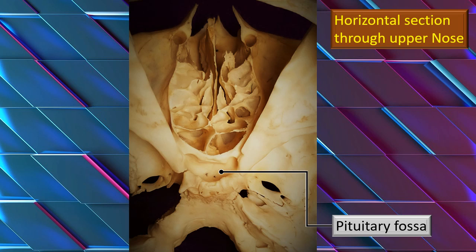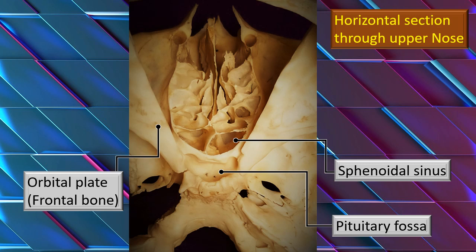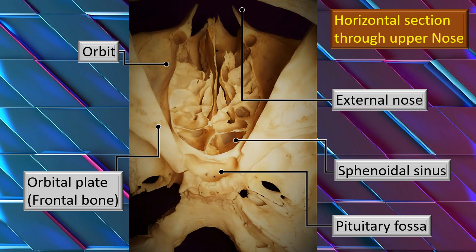We will zoom in on the horizontal section. The orientation is different from the previous slide. We are now looking at the sphenoid sinus from above. First, let's identify the pituitary fossa. Right in front of it is the sphenoid sinus. Further in, on either sides anteriorly and superiorly, you can see the orbital plate of the frontal bone and the orbital cavity, and the external nose. This gives you a rough orientation of all the sinuses in between the nasal cavity and the orbital cavity, particularly the ethmoid and its posterior relation, the sphenoid sinus.